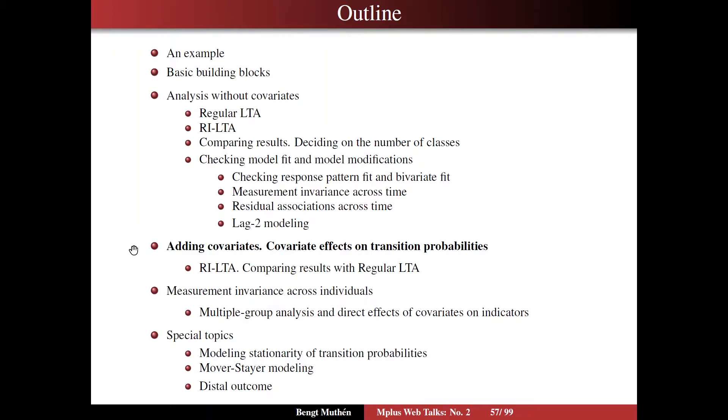Looking at the outline on slide 57, we now turn to covariates added to the model. Covariate effects on the transition probabilities, we're going to start with the regular LTA and then turn to RILTA and compare the results.